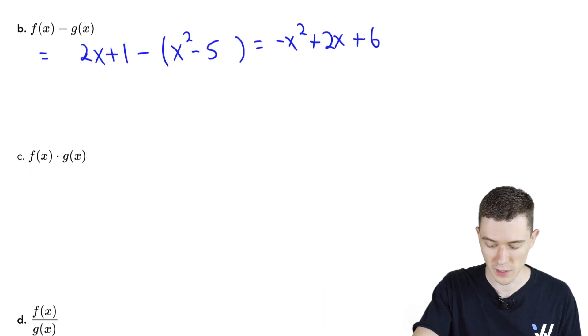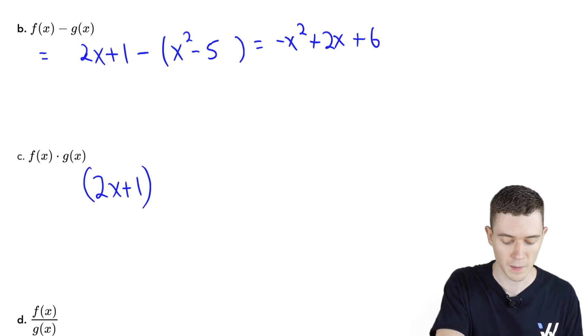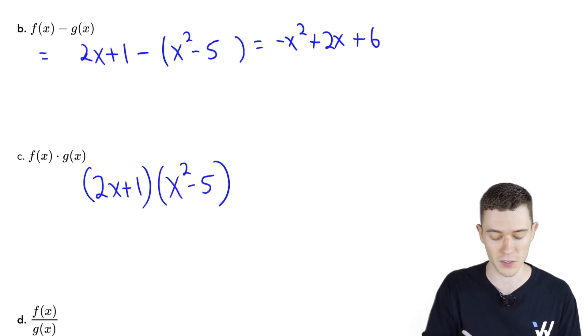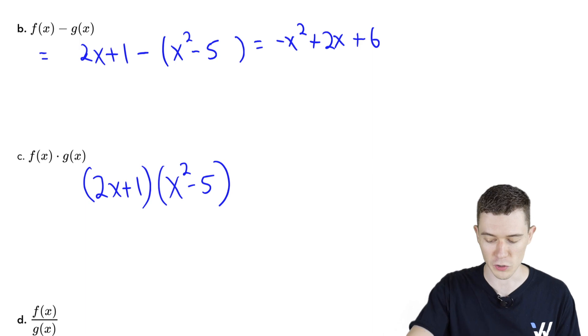f times g: let's just take the f function in parentheses, 2x plus 1, multiply it by the g function in parentheses, x squared minus 5. And I think for now I'm just going to leave it like that. I'm not going to worry about distributing. Right now I just want to show you what you can do with functions.